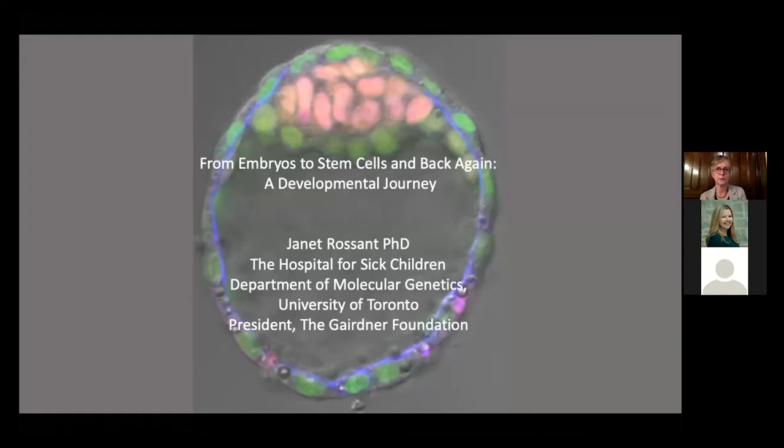I'll give you a quick overview of the many different aspects of mouse development we've studied over the years, focusing particularly on early mouse development — how the embryo forms, how stem cells form. At the end, I'll set it in a broader context by discussing what happens when you start working on mouse embryos: the inevitable question of whether to study these things in human embryos, and the political, legal, and ethical concerns that arise.